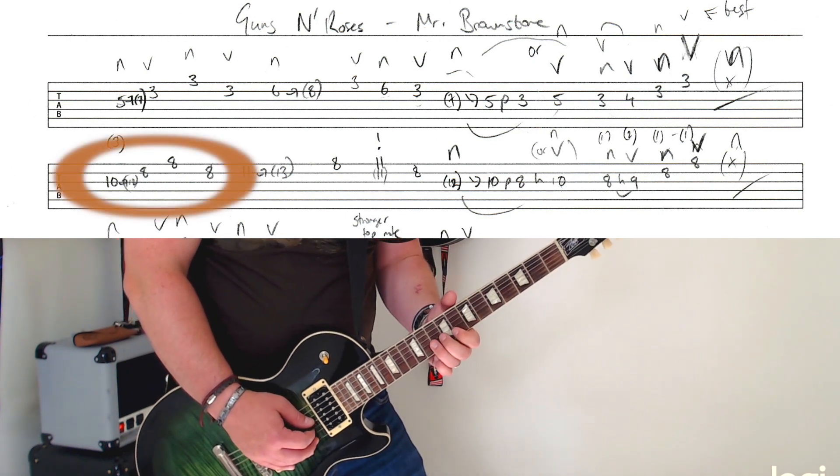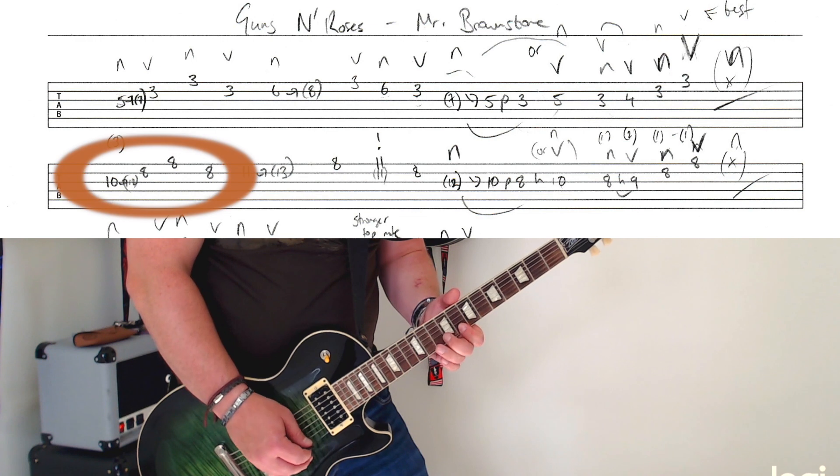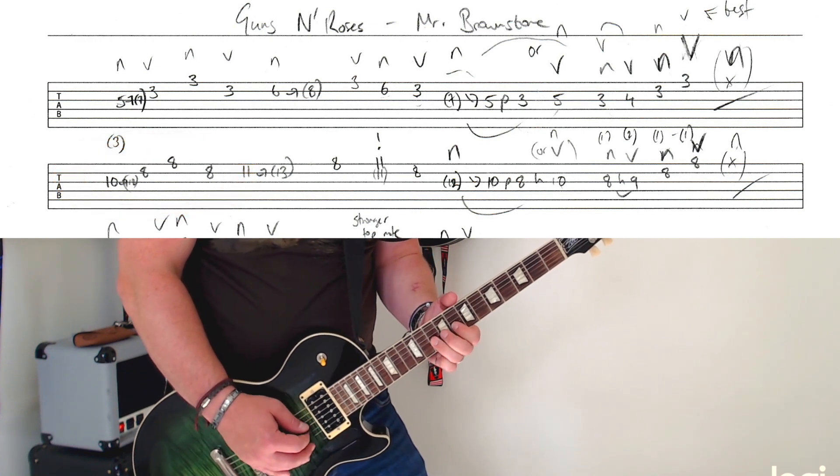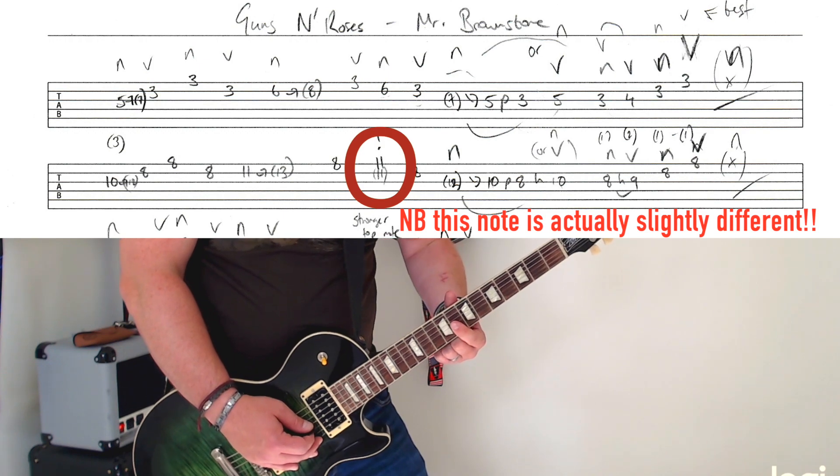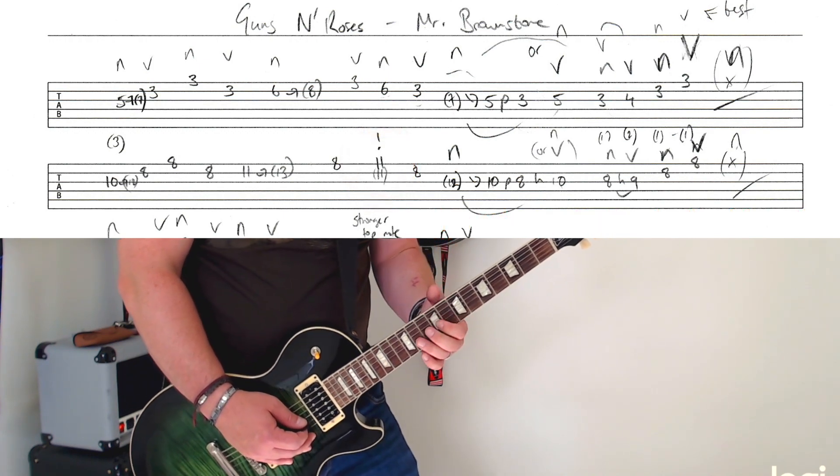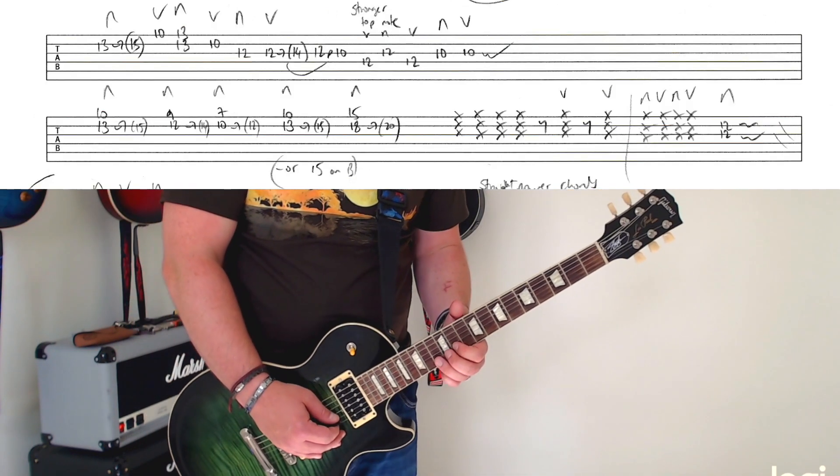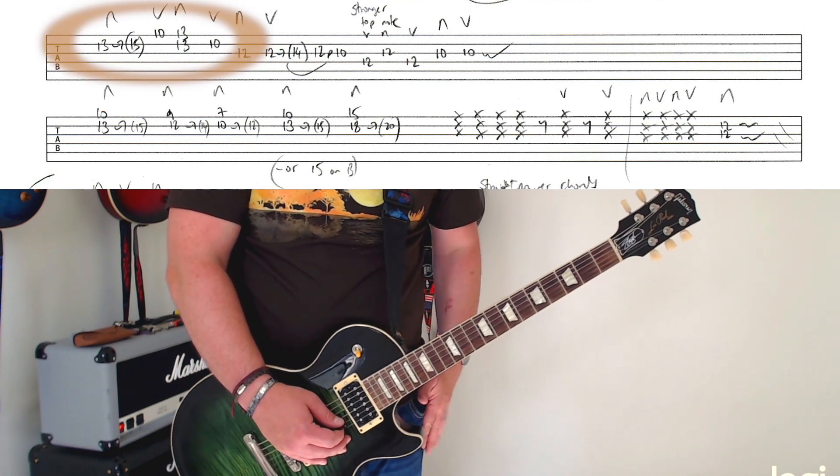And then you take that whole shape and do it again. Exactly the same, but with the 8th fret as your kind of bass there with your first finger. Now the 3rd shape is actually different, annoyingly, so we can't just use that same thing again.